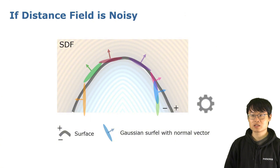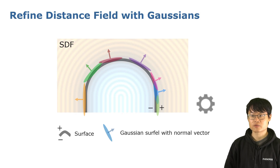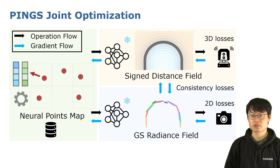Likewise, when the LiDAR measurements are sparse and the visual data are rich, we can also correct the noisy distance field using the radiance field. In summary, we optimize the shape and color codes stored in the neural points, supervised by 3D losses from range measurements, 2D losses from rendering, and the consistency loss between both fields.